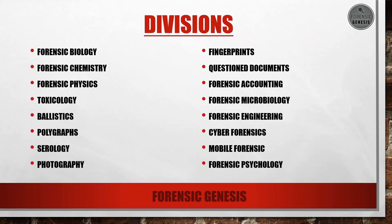Now let's talk about the divisions of forensic science: forensic biology, forensic chemistry, forensic physics, toxicology, ballistics, polygraphs, serology, photography, fingerprints, questioned documents, forensic accounting, and many more. Among all these divisions, many have a high capacity to incorporate people and can be thought of as your specialization, as they are very demanding fields. We will be taking up each of them one by one in our forthcoming videos.